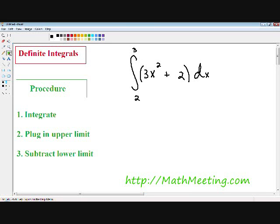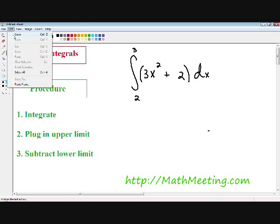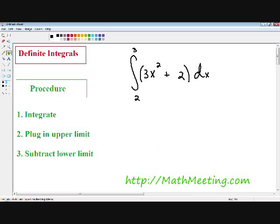The steps in definite integrals are the same as in indefinite integrals. Let's get started. Step 1 is to integrate. We integrate this exactly as we would for an indefinite integral, using the basic method—add 1 to the exponent and divide by the same. So this integral would be 3x cubed over 3, plus 2x.